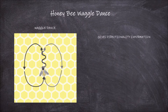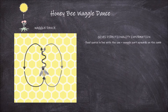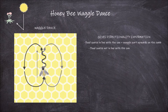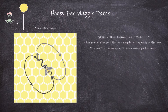For example, a food source found directly in line with the sun — the bee will direct their waggle dance upwards on the comb. For food sources found not in line with the sun but at an angle to the sun, the bee changes the direction of the waggle phase on the comb. The waggle phase is done at a corresponding angle to either side of upwards on the comb.